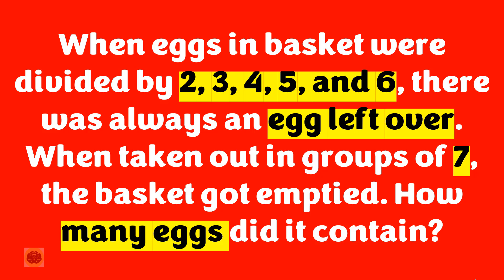The riddle states that when eggs in basket were divided by 2, 3, 4, 5 and 6, there was always an egg left over. When taken out in groups of 7, the basket got emptied. How many eggs did it contain?